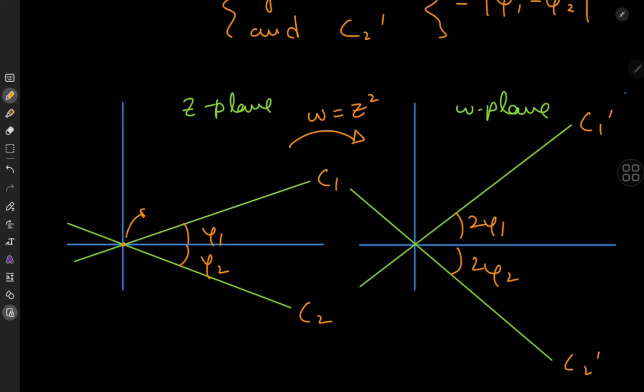So for the curve c1 prime it's two phi1 and for the curve c2 prime it's two phi2. So initially the angle between the curves at their point of intersection was phi1 minus phi2 whereas now it's two times phi1 minus phi2.